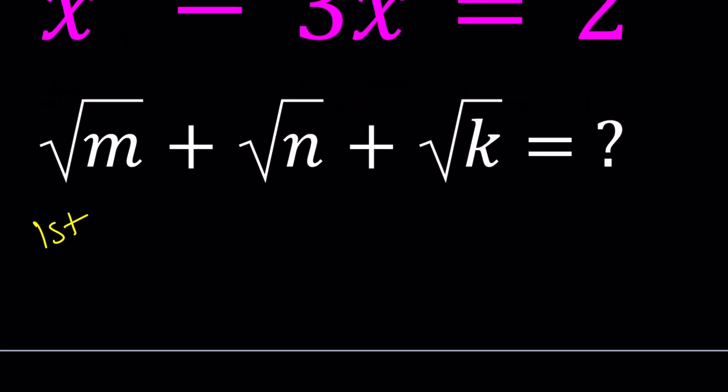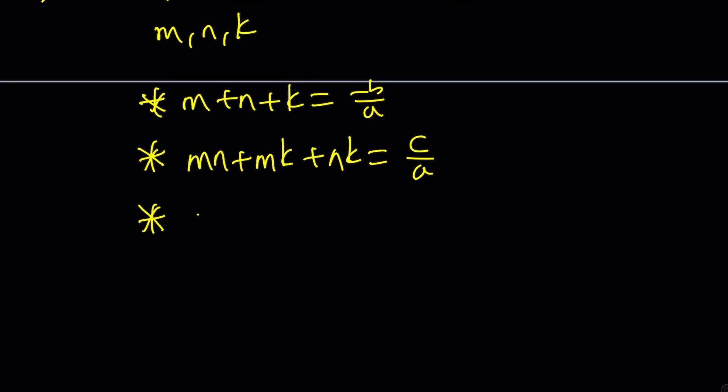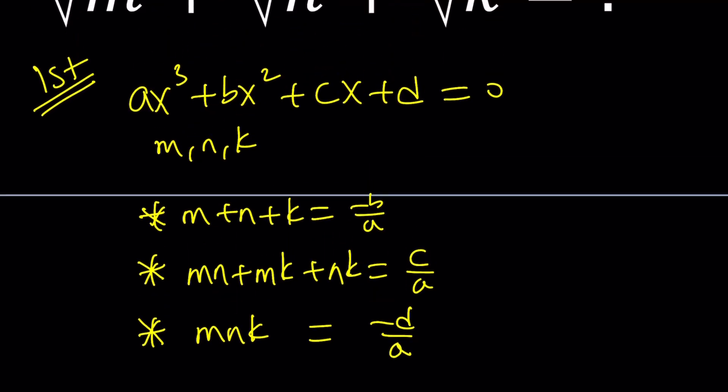We're going to be using Vieta's formulas. Just a quick reminder, if you're using Vieta's formulas in a cubic equation like ax³ + bx² + cx + d = 0, and the roots are m, n, k, then the sum of the roots is -b/a, the two-way products mn + mk + nk as a sum is c/a, and the product of the roots mnk is -d/a. Notice you start with -b and the sign alternates. You always divide by a. That's what we're going to use.